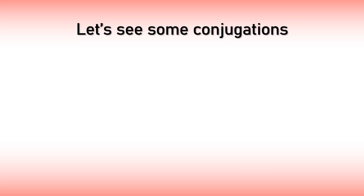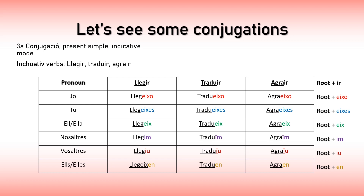For the third conjugation, you should know that there are two separate types: the incoative verb and the pure verb. Don't worry, don't freak out — the only difference between these two types is how they're conjugated in the present tense. That is it. The rest of the tenses are exactly the same, but it is important to know there is a difference. For incoative verbs, the pattern is applied the same way: root plus suffix.